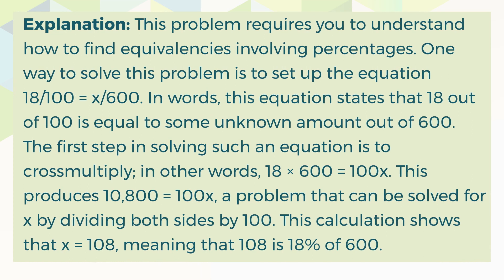Explanation. This problem requires you to understand how to find equivalences involving percentages. One way to solve this problem is to set up the equation 18 over 100 equals X over 600. In words, this equation states that 18 out of 100 is equal to some unknown amount out of 600. The first step in solving such an equation is to cross-multiply; in other words, 18 multiplied by 600 is equal to 100 multiplied by X.